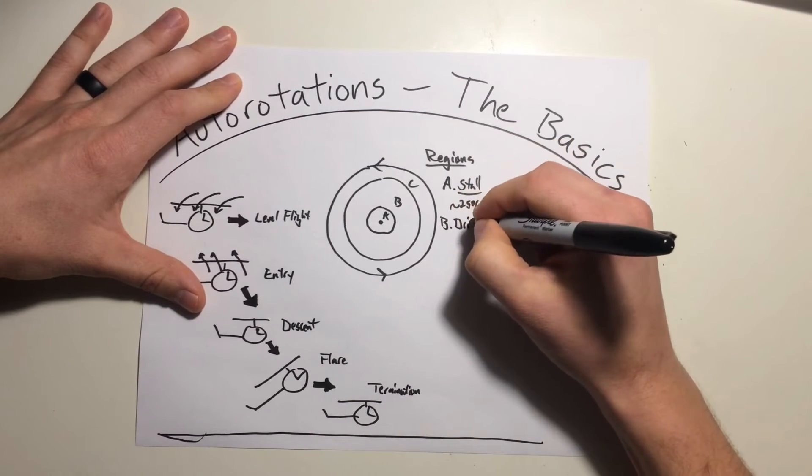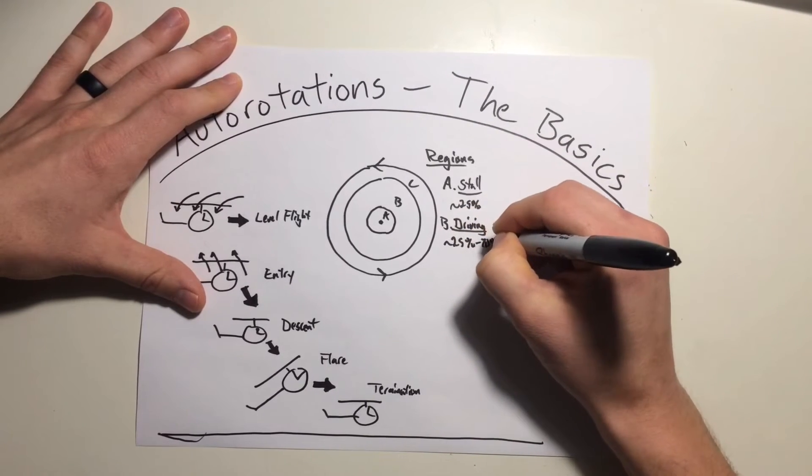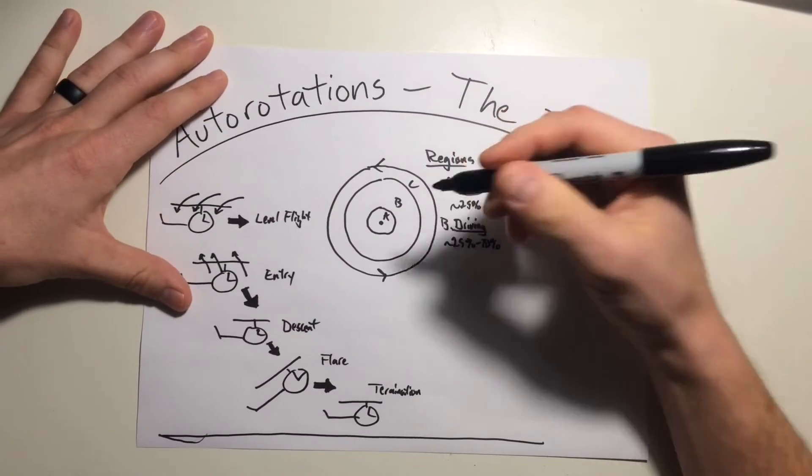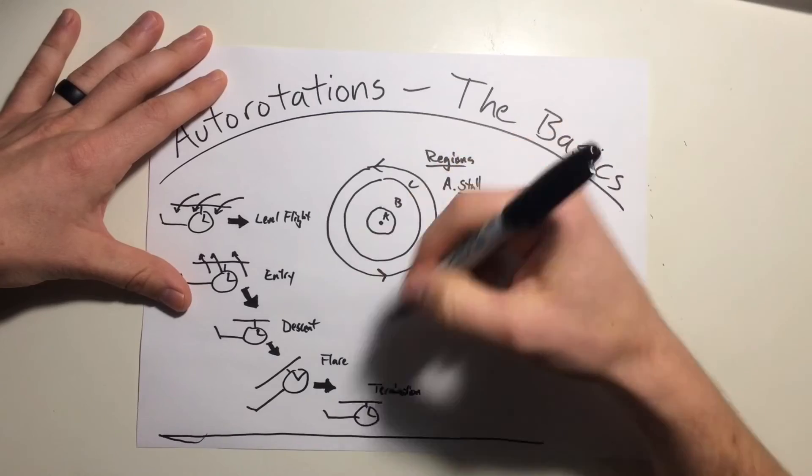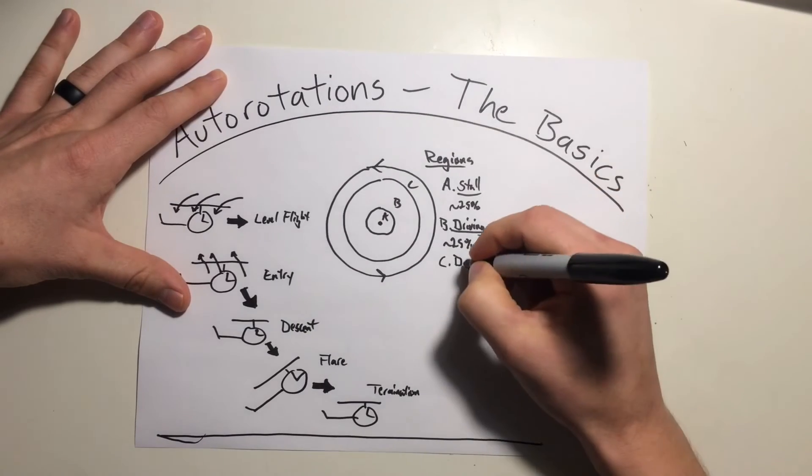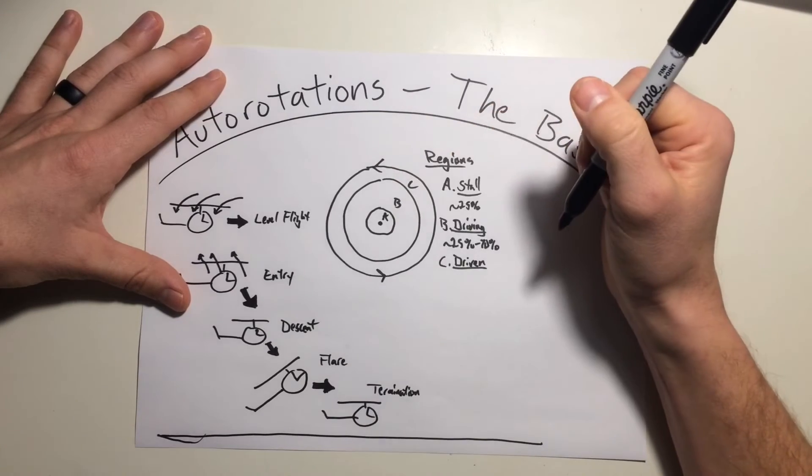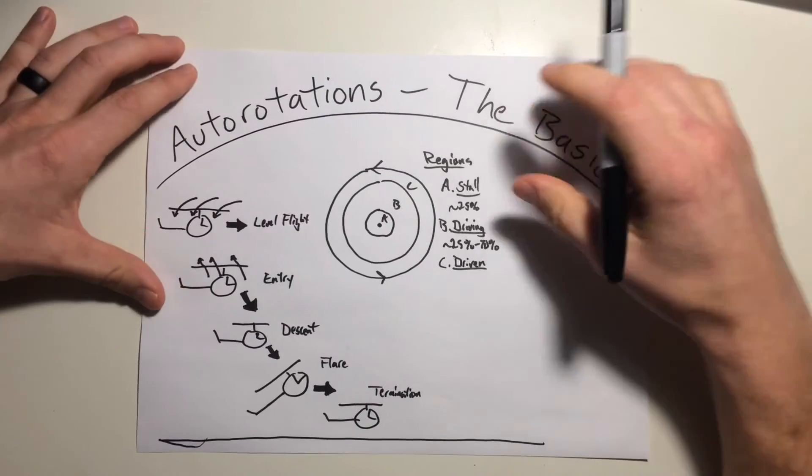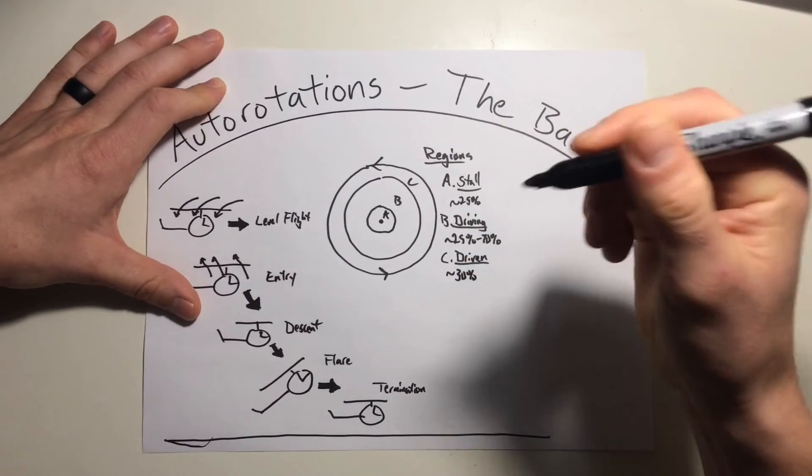This next region is going to be your driving region. And that's going to take place at roughly 25% to 70% of your blade radius area. And this is what's driving your rotor. So the rotor is extracting the energy from the upwards flow of air. And this region generates rotor RPM. It's increasing your rotor's RPM as you descend through the sky. This last region, just because we had that driving, we've got to have a driven. This driven region is the area being driven by the driving region. It's the lift producing area of the blade. It's absorbing the rotor RPM in order to have that autorotational descent, that glide characteristic. And this is going to be taking place in, say, the last 30% of your blade radius area.